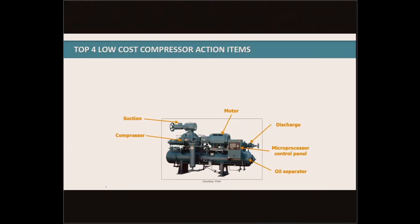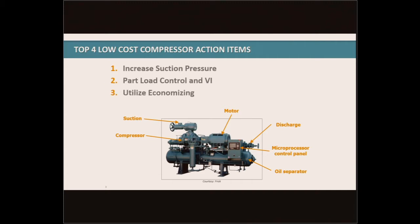Thank you. My name is Rob Travis. I'll be talking about compressor efficiency and sequencing for industrial refrigeration systems. Specifically, we've got four low-cost opportunities to identify with compressor operation: the first is increasing suction pressure; second, part load control and VI; third, utilizing and economizing wherever possible; and number four, compressor sequencing and ensuring that we've got the most efficient compressors operating at any point in time.